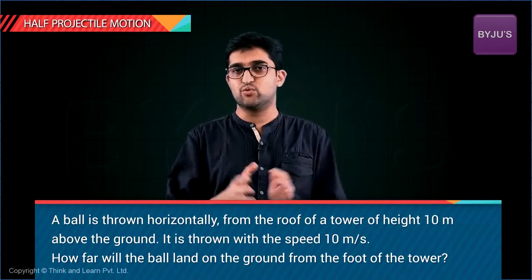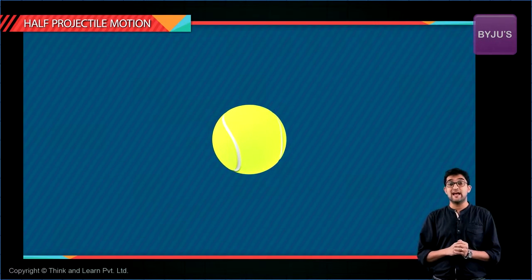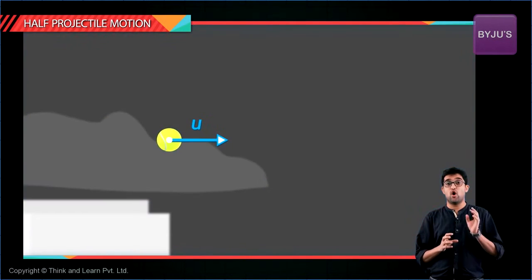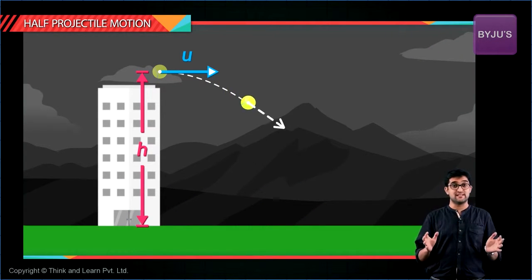Let me solve a half projectile question using this approach. So the question you can see on the screen has got a ball thrown horizontally at 10 meter per second from a height of 10 meters.